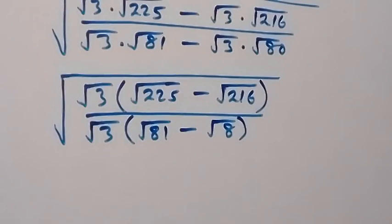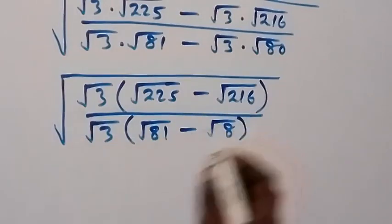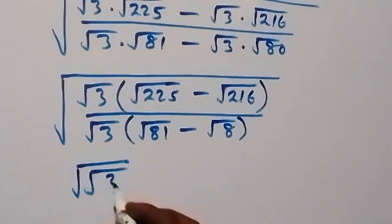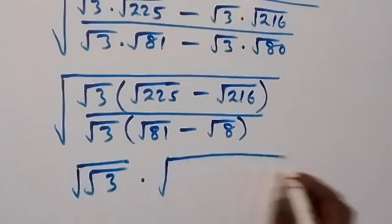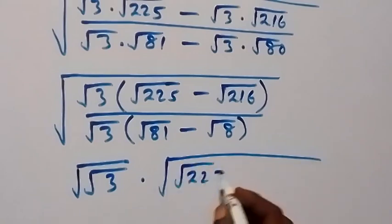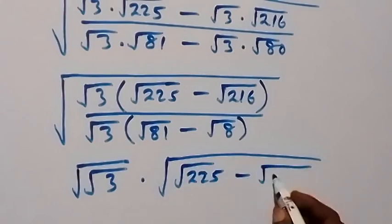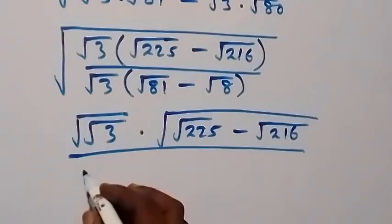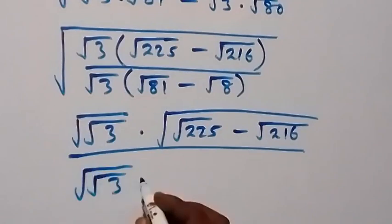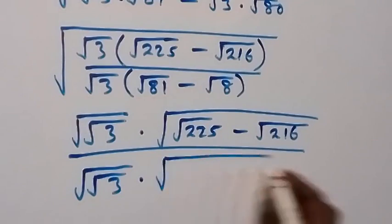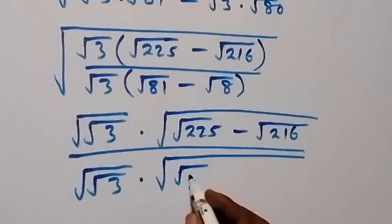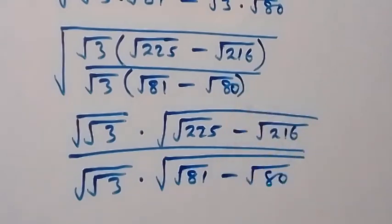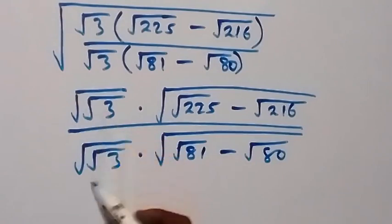In the next step we can separate it further. Up here we have square root of root 3 times square root of the bracket root 225 minus root 216, then divided by, in the denominator, square root of root 3 times square root of the bracket root 81 minus root 80. Then square root of root 3 cancels each other here.